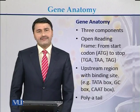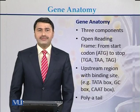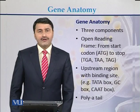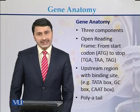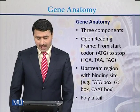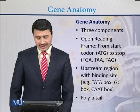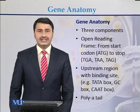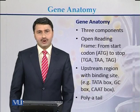If we look at the anatomy of a gene, a gene consists of three main components. The first is called the open reading frame. The open reading frame spans from the start codon up to the stop codon. The start codon can be ATG, and the stop codons can be TGA, TAA, and TAG. The entire sequence present between the start codon and the stop codon is called the open reading frame.